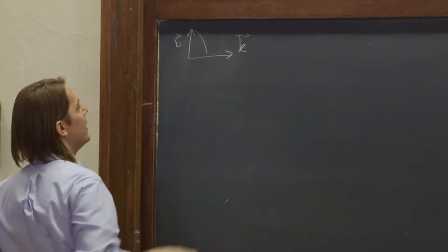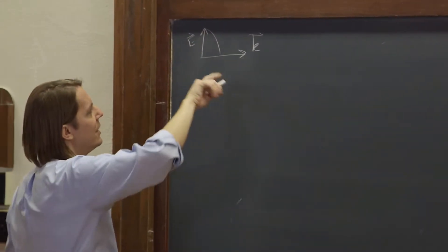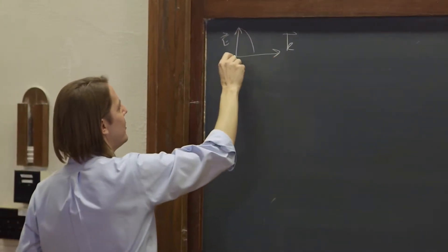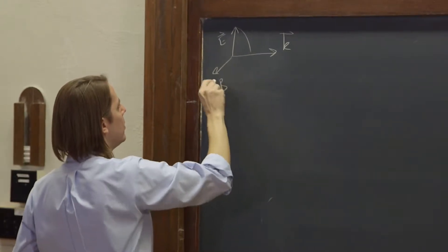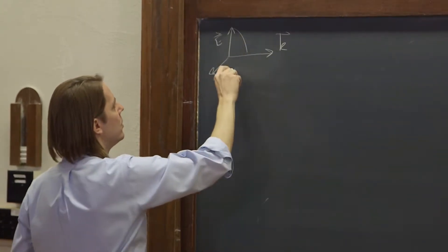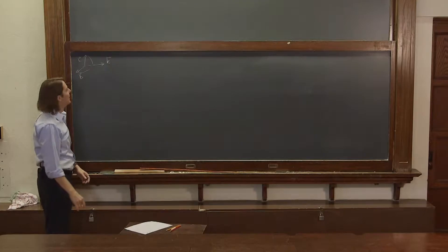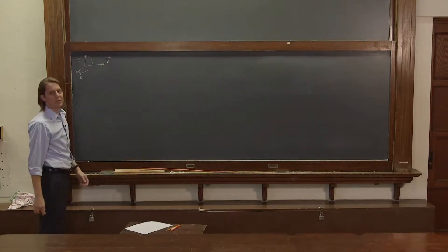We have an E field here, and it goes sinusoidally in the direction of the K vector, and we have a B field perpendicular to it. It also changes sinusoidally in phase with the E field.